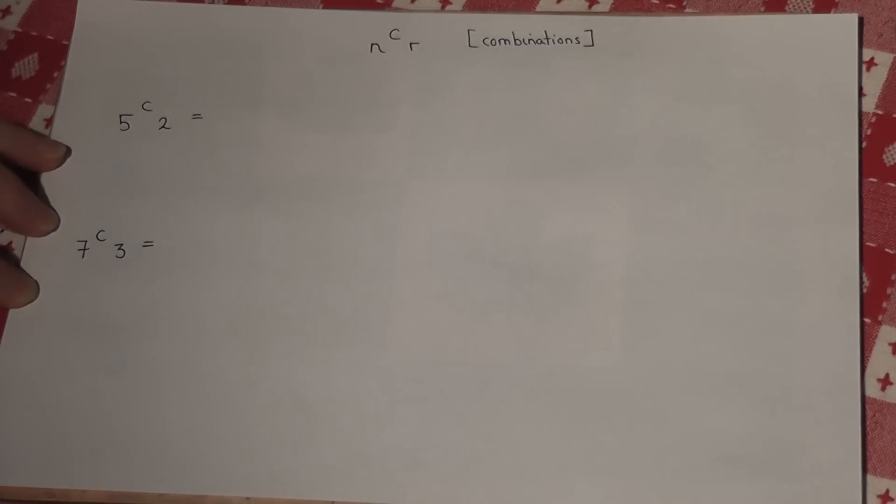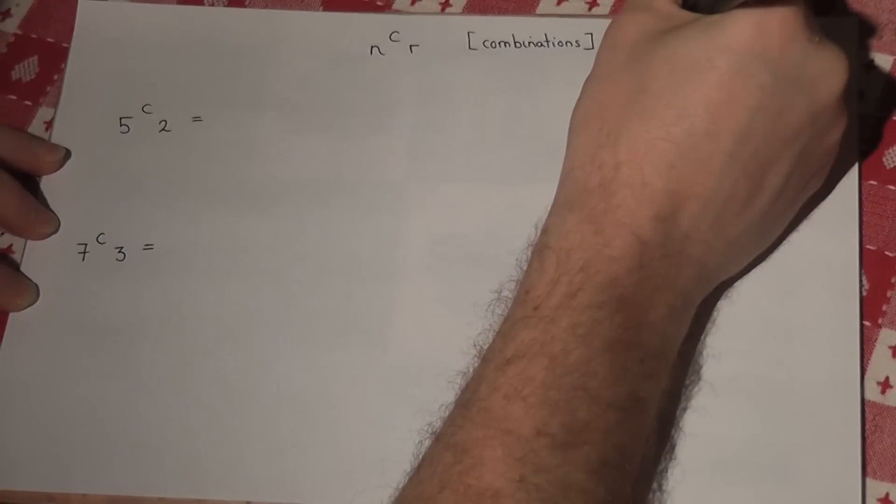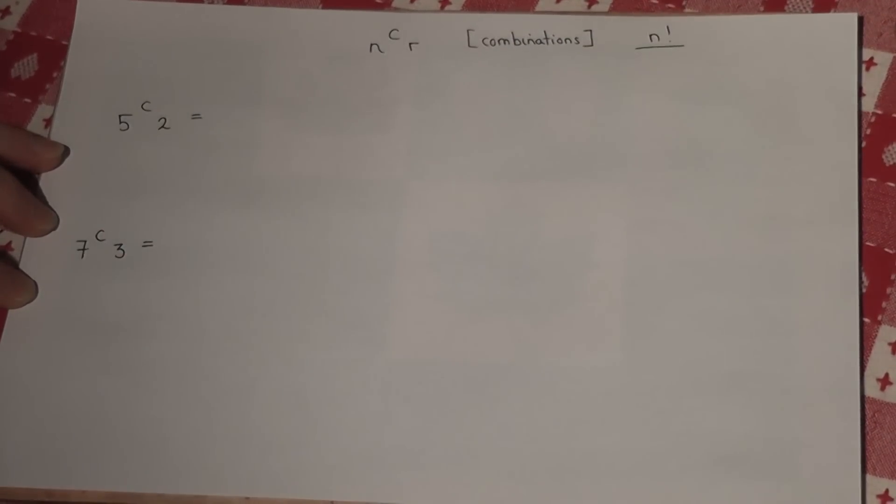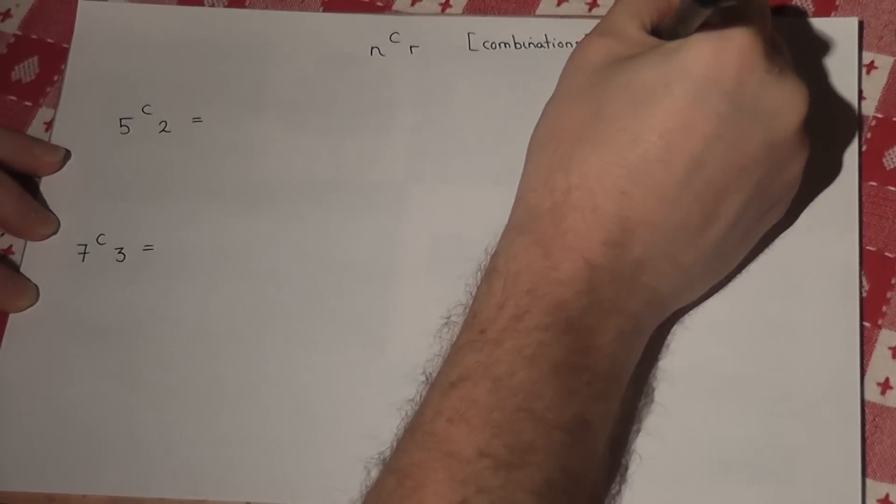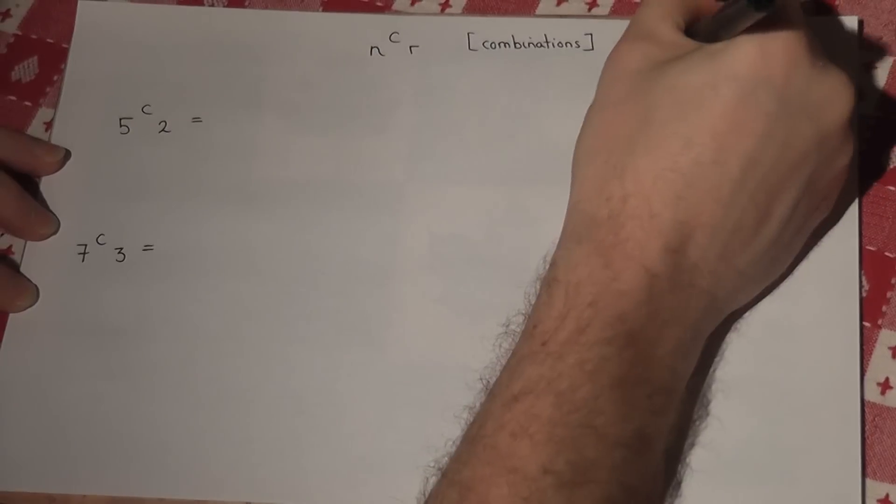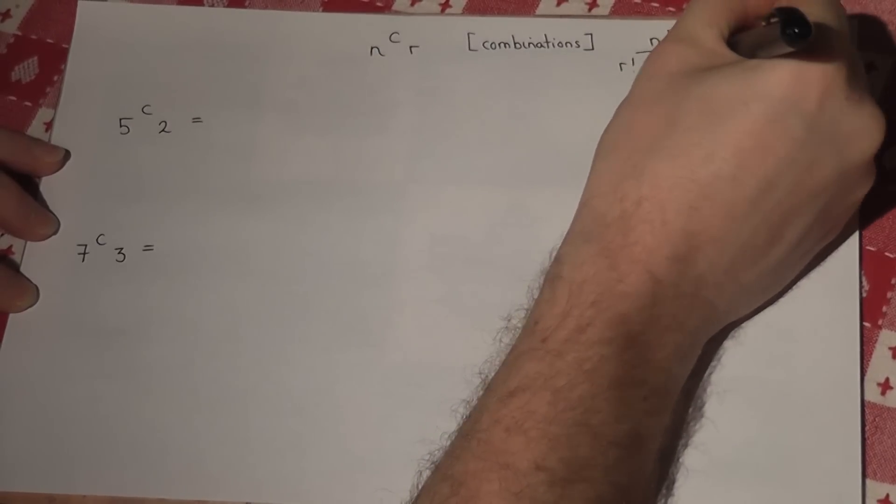The NCR button on the calculator has a formula which looks quite complicated, but the formula is N factorial over R factorial times by N minus R factorial.